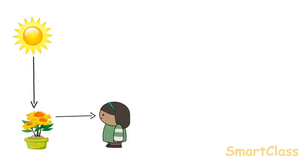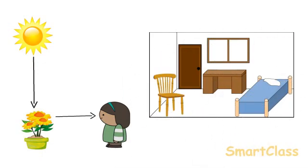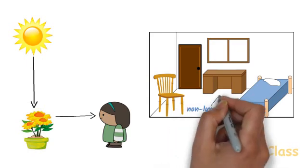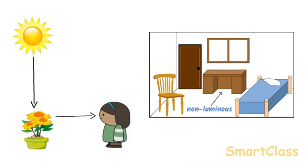We can see many things kept in a room during the day on which sunlight does not fall directly. All the objects outside the room scatter the sunlight falling on them in all directions. Even the air scatters some sunlight. It is this scattered sunlight which enters the room and helps us to see the things lying in the room which are not in direct sunlight. The table kept in a room is a non-luminous object. However, we can see the table because it reflects the light falling on it from the sun, bulb or tube light in all directions, and when this reflected light enters our eyes, we are able to see the table.